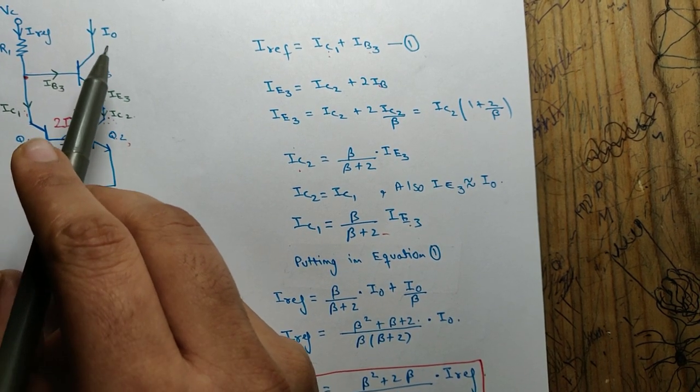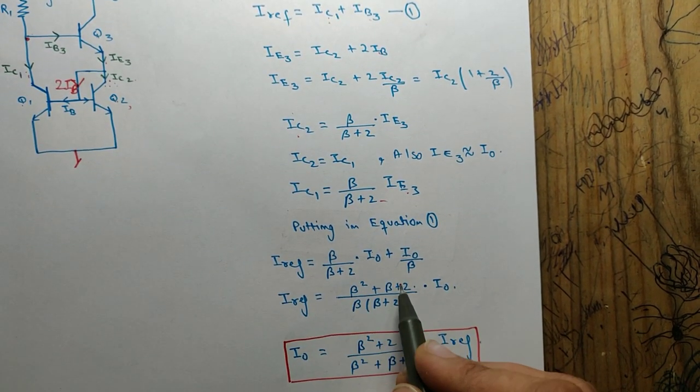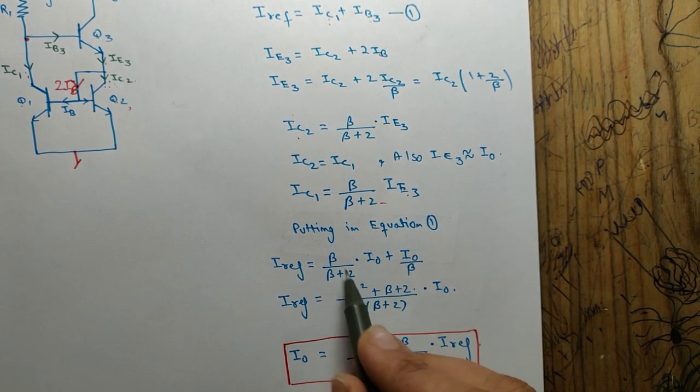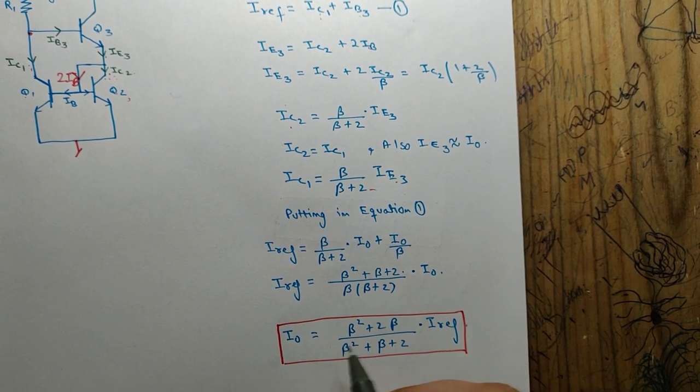So ib3 is equal to i0 by beta. Now if I rearrange this, taking the LCM I will get this. Now if I try to write i0 in terms of i_reference, I will get this. So this is the Wilson Current Source.